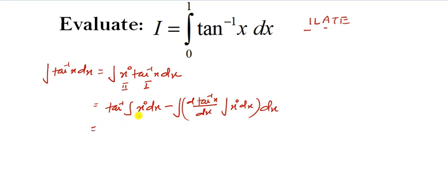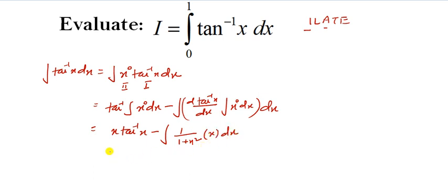So, applying this formula, we get: x·tan inverse x minus the integral of [1 divided by (1 plus x squared)] times x dx.